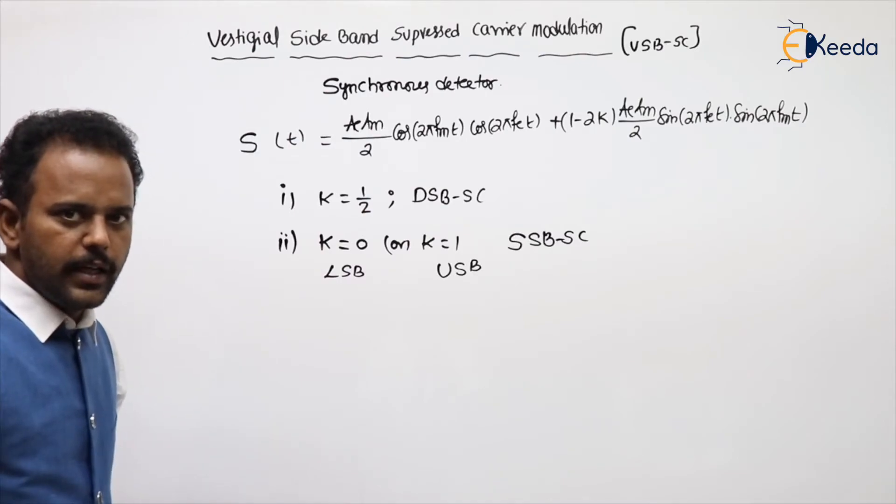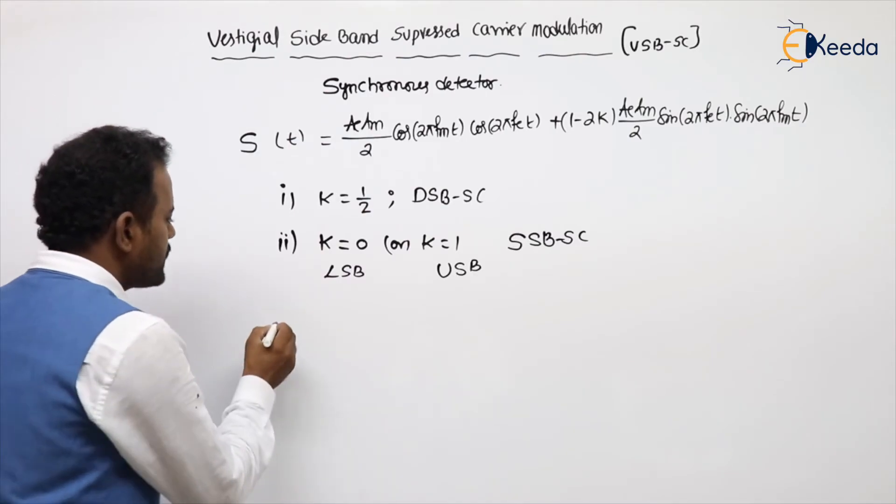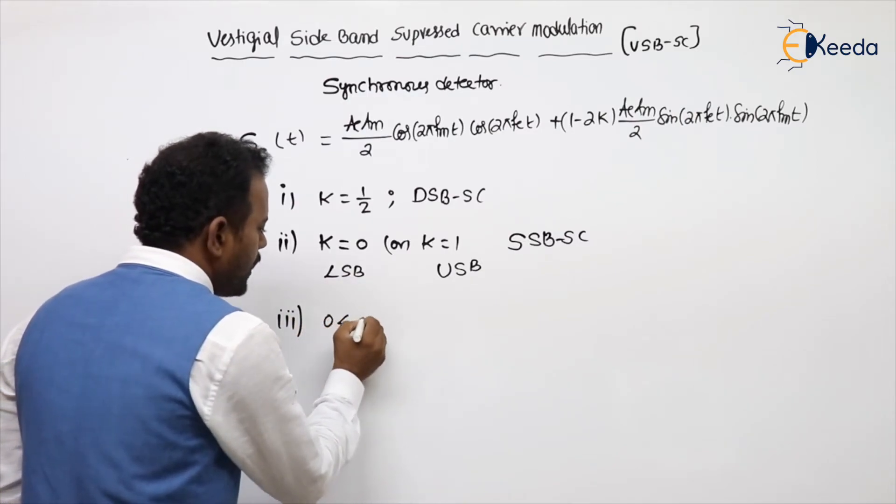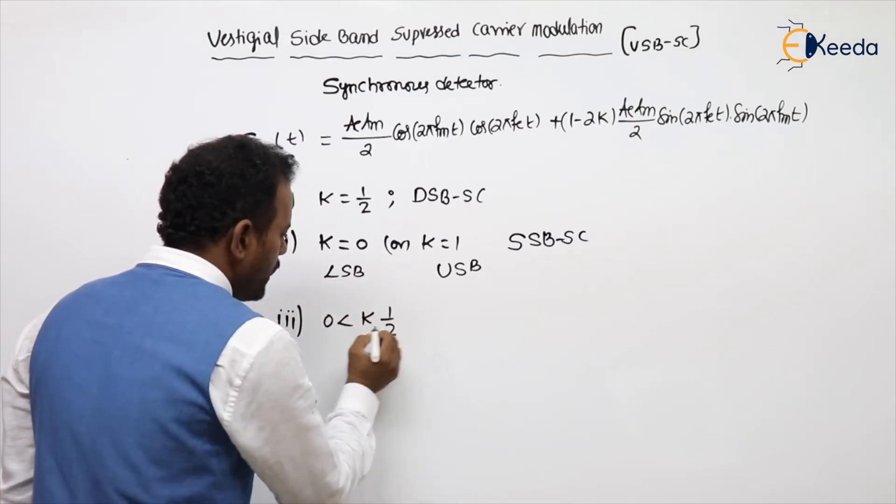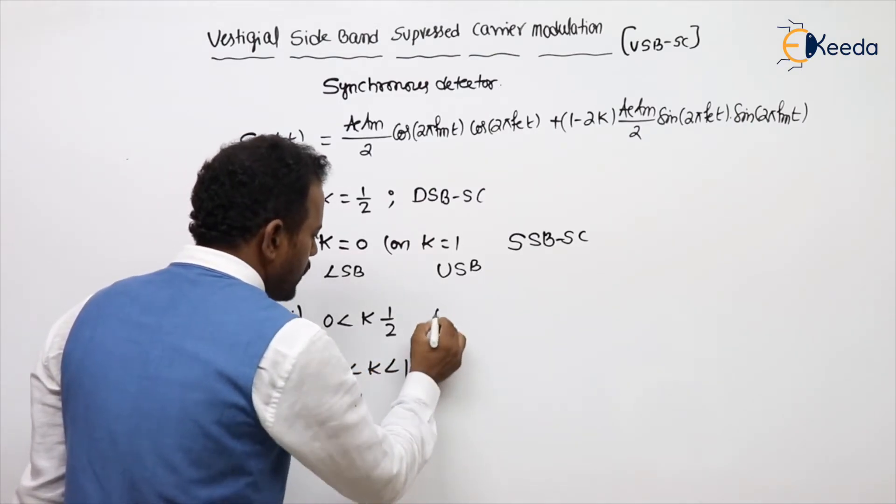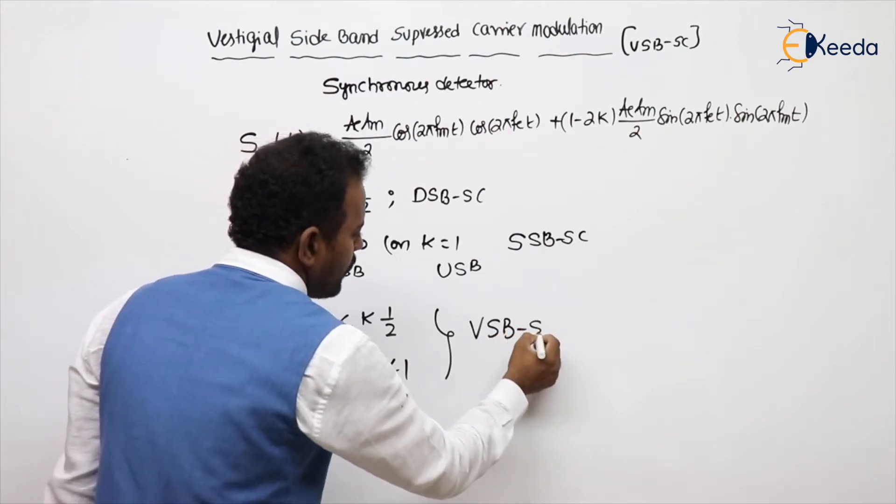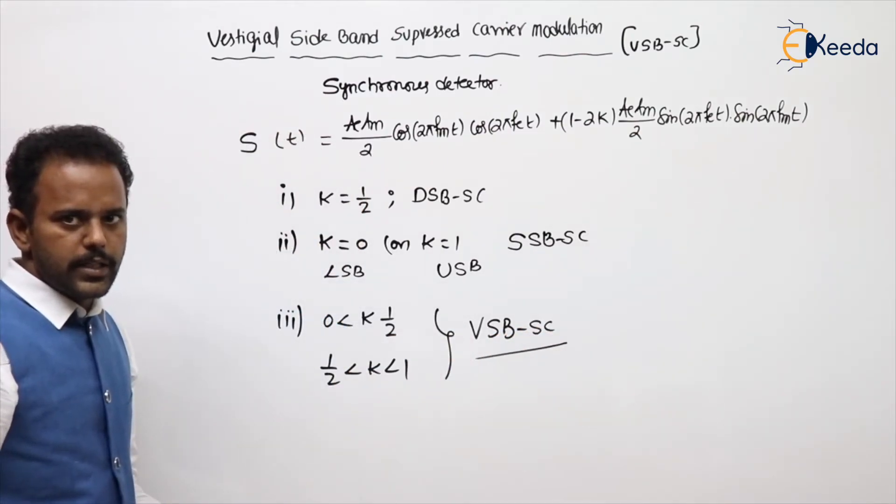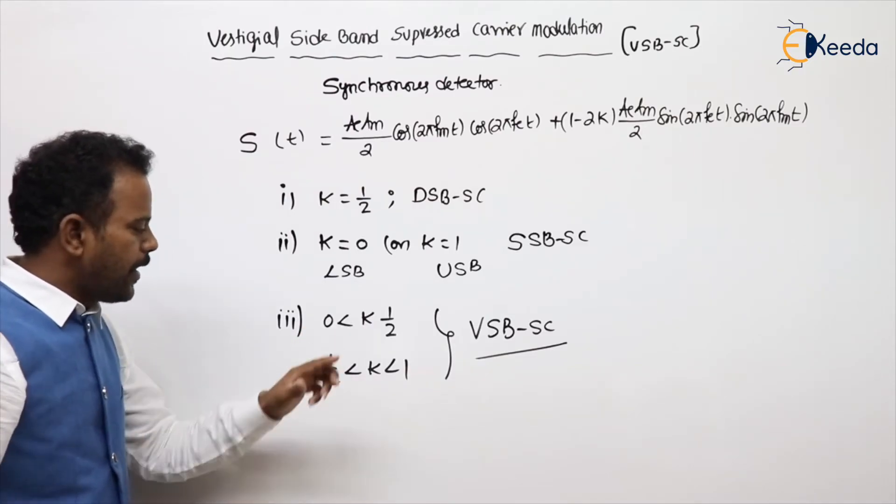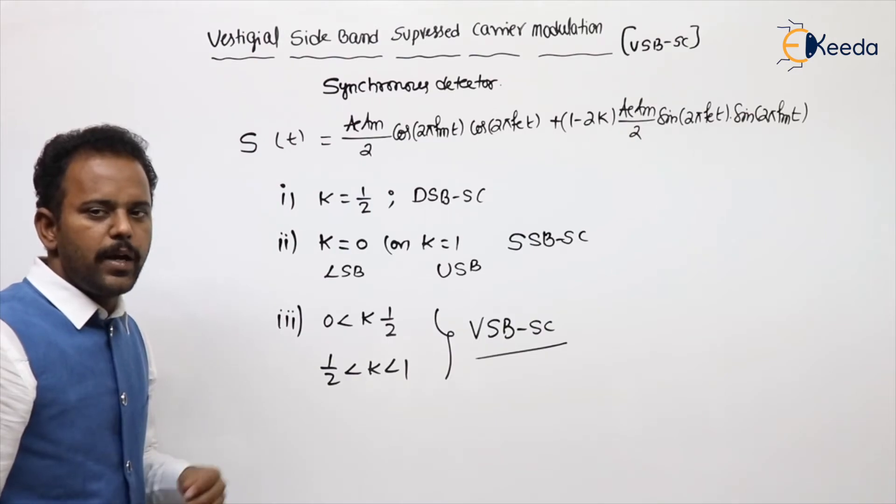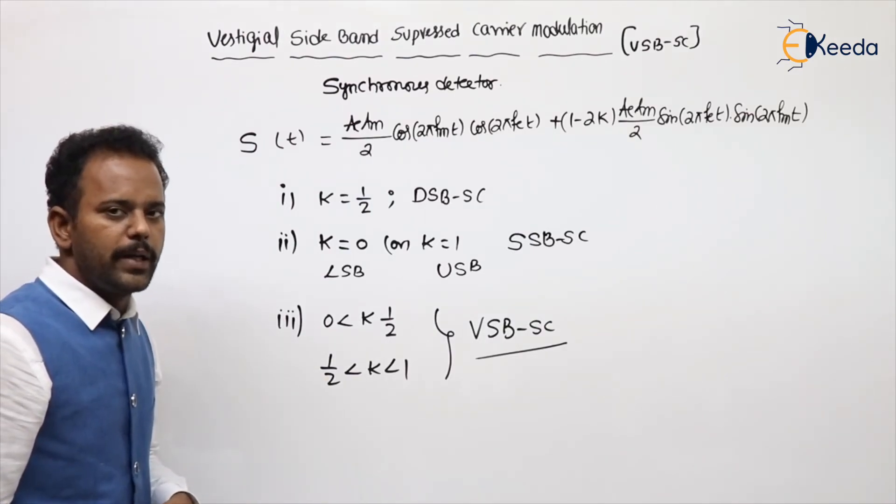Then when is VSBSC coming? If you are taking k value in between 0 to 1 by 2, as well as 1 by 2 to 1, then the modulation scheme coming is VSBSC. Depending upon the k value, that separation in one sideband, adding in another sideband will be there.